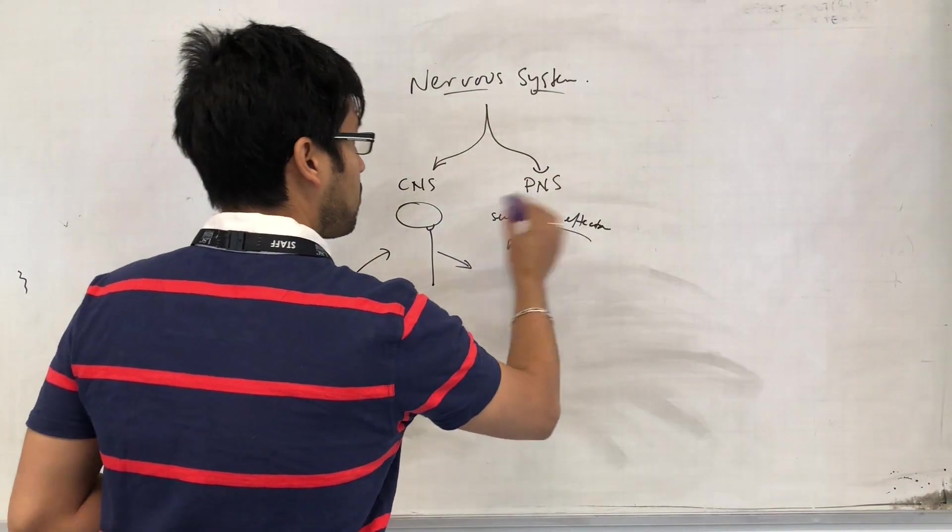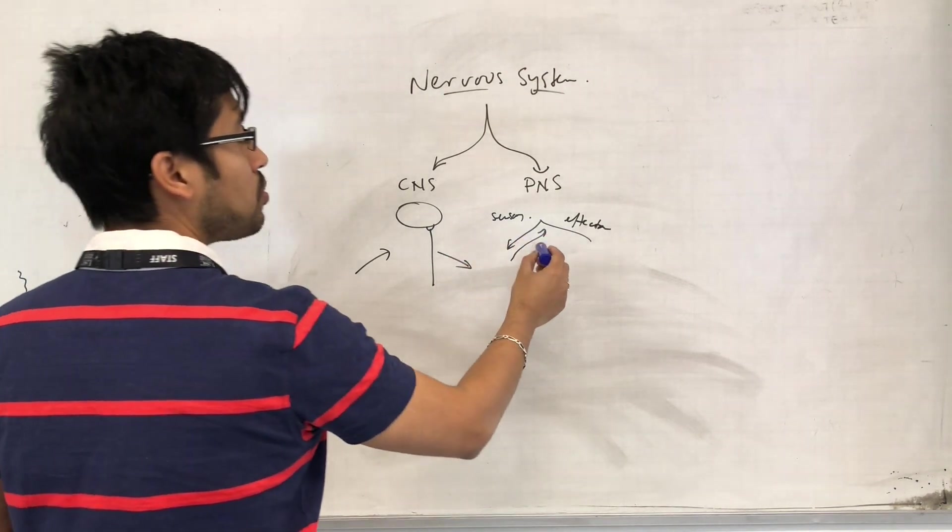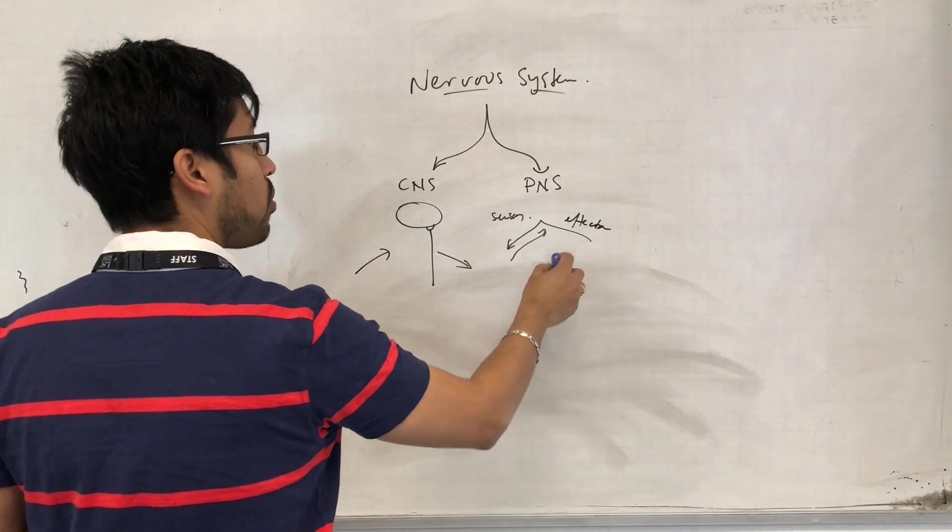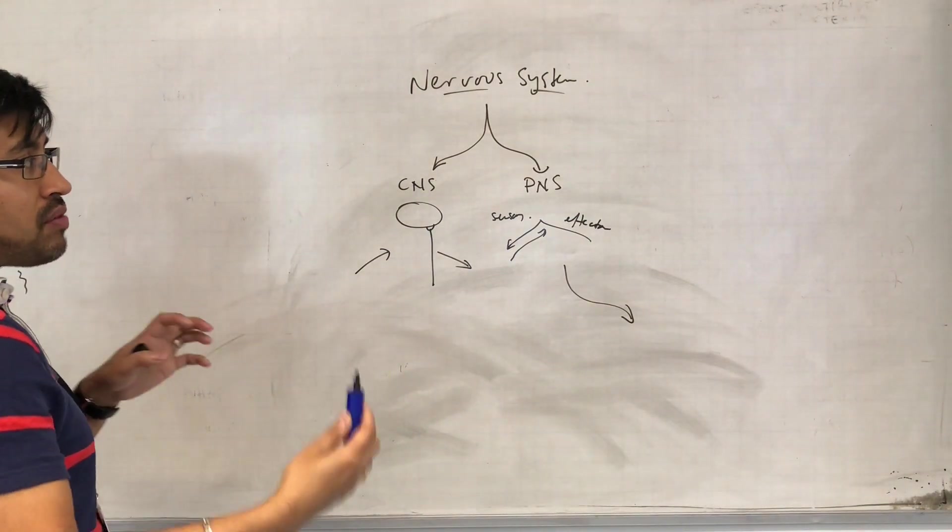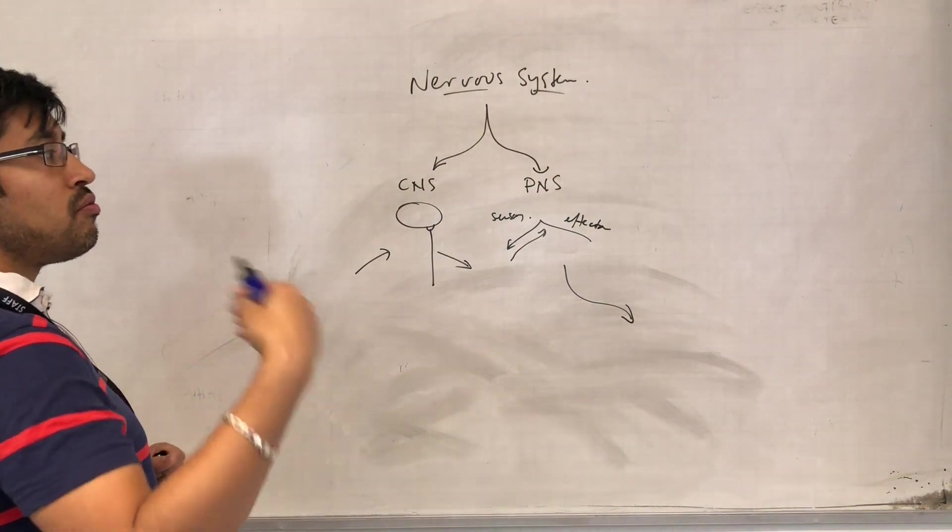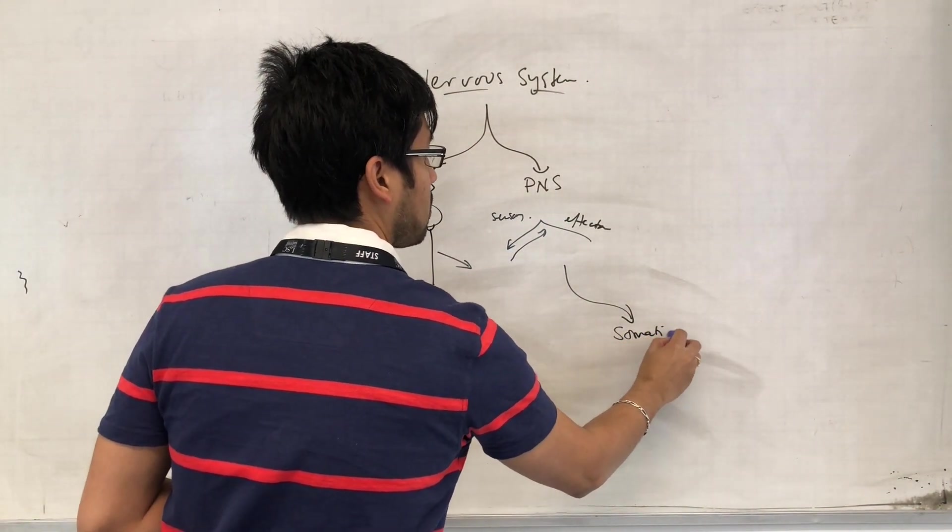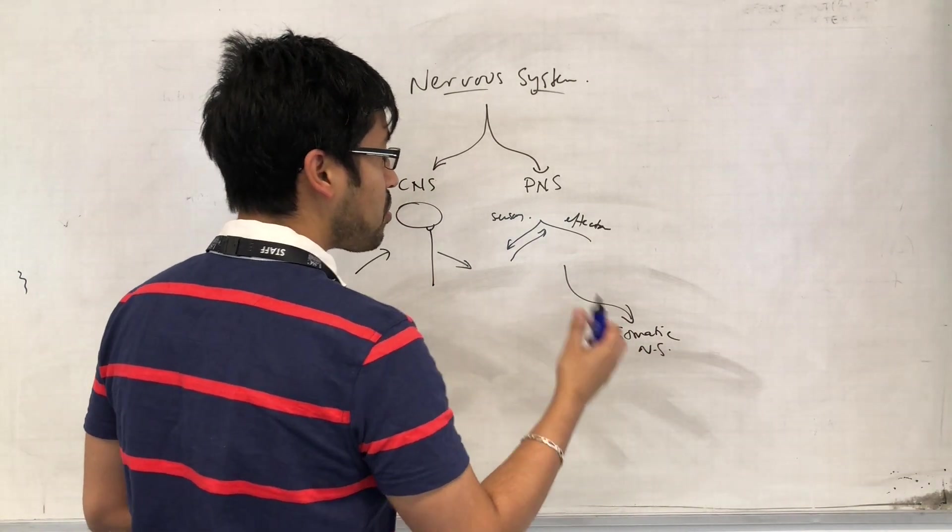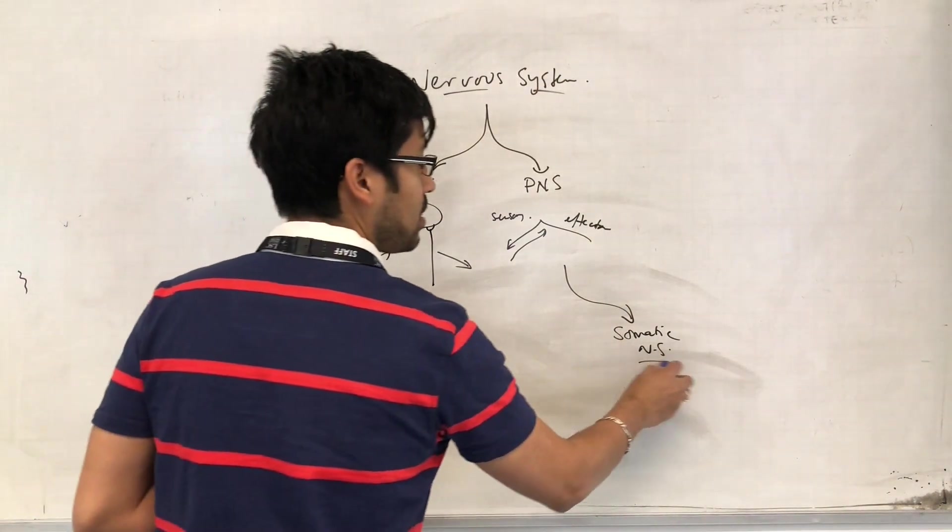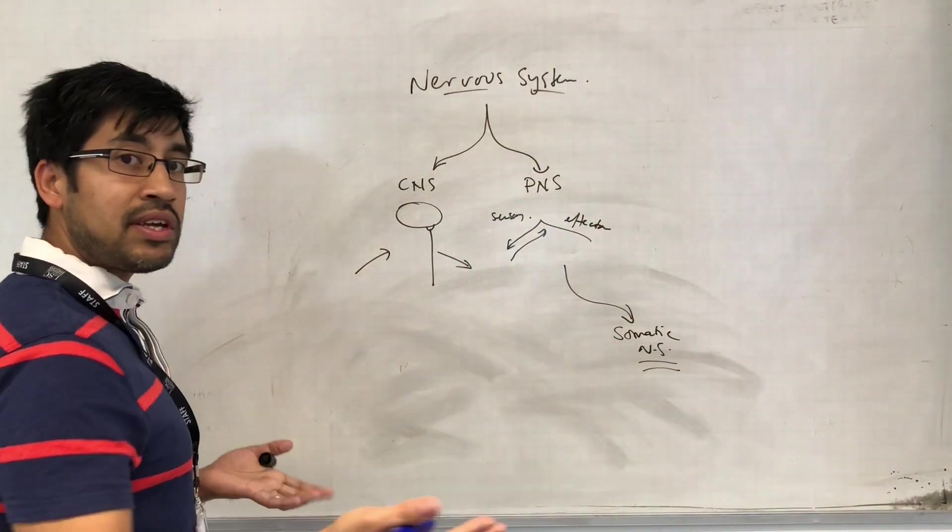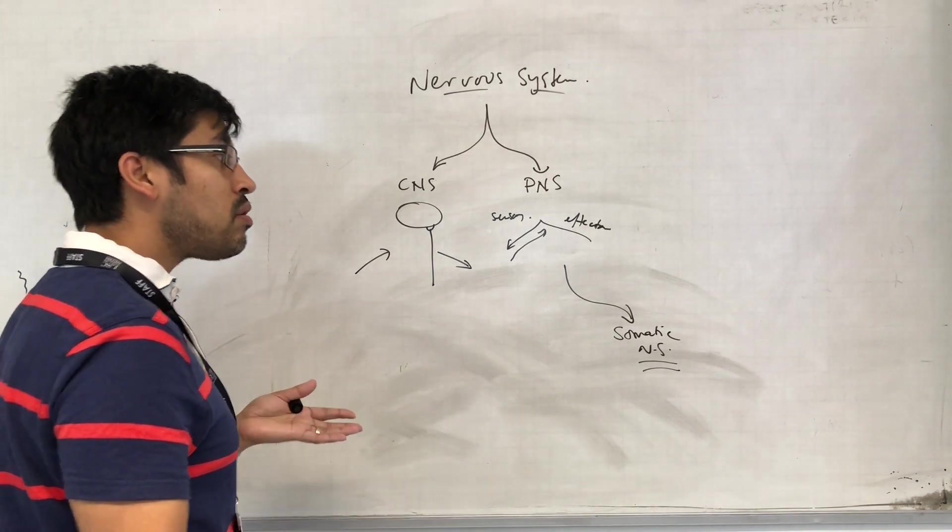Now the peripheral nervous system is itself divided into two parts. The things that you control voluntarily are called the somatic nervous system - these are things under conscious control. Things like your skeletal muscles, essentially that's what you are in control of.